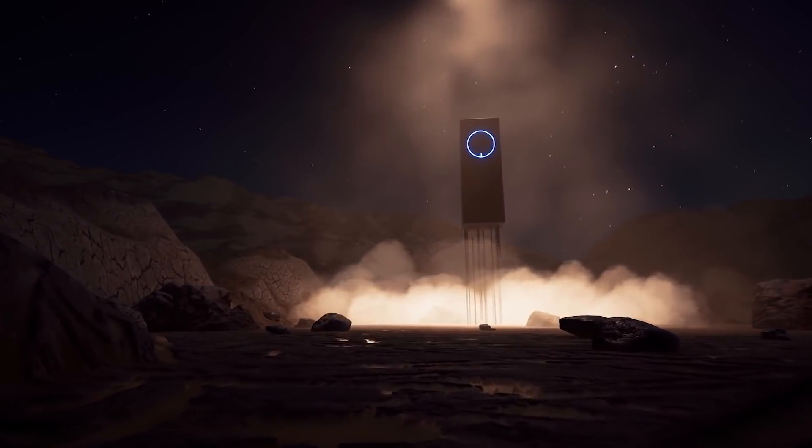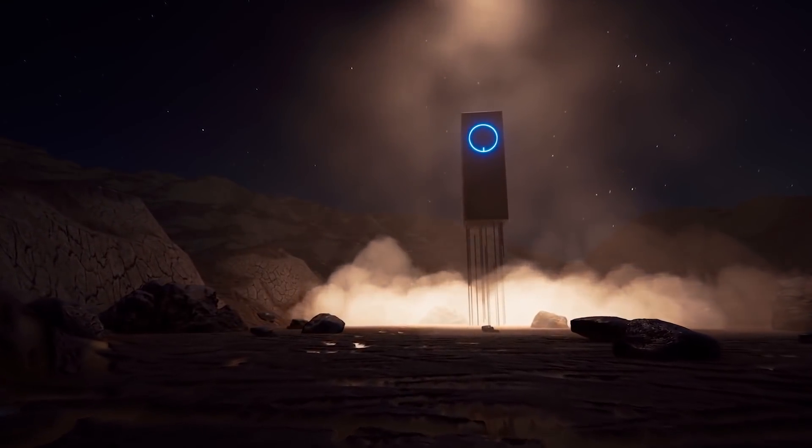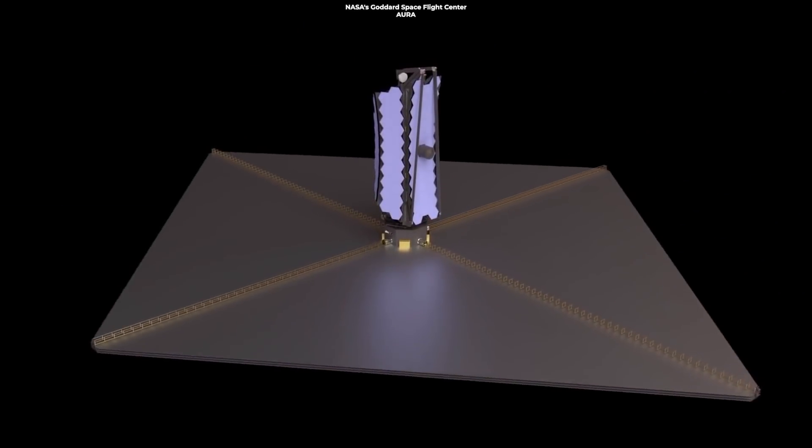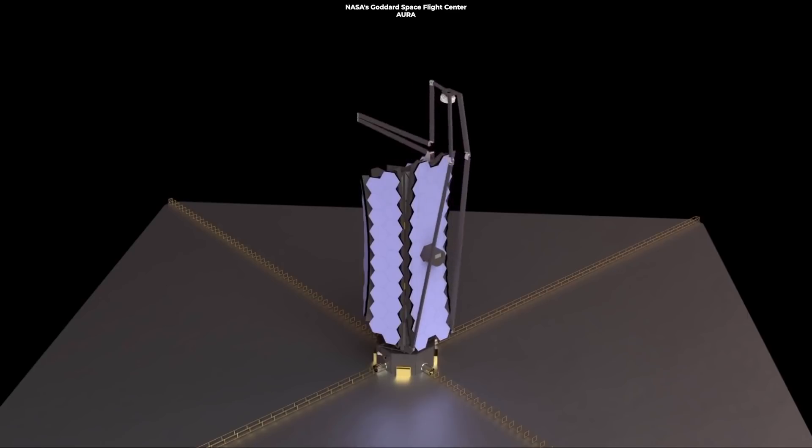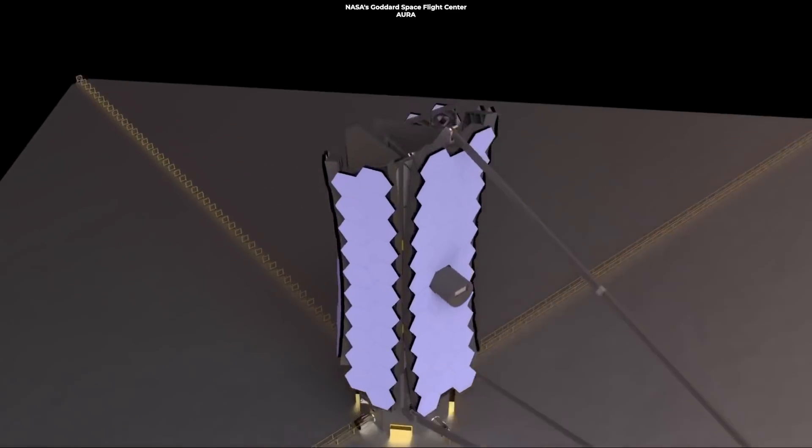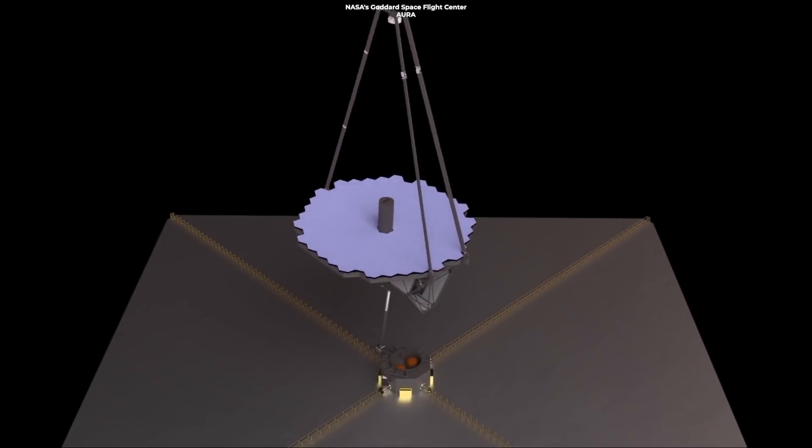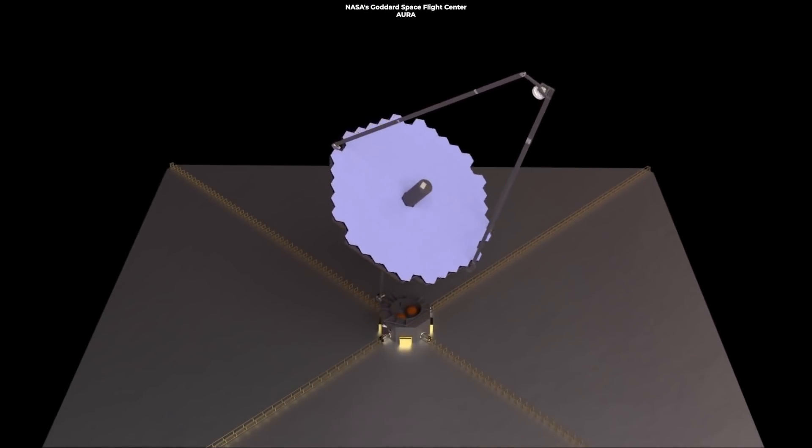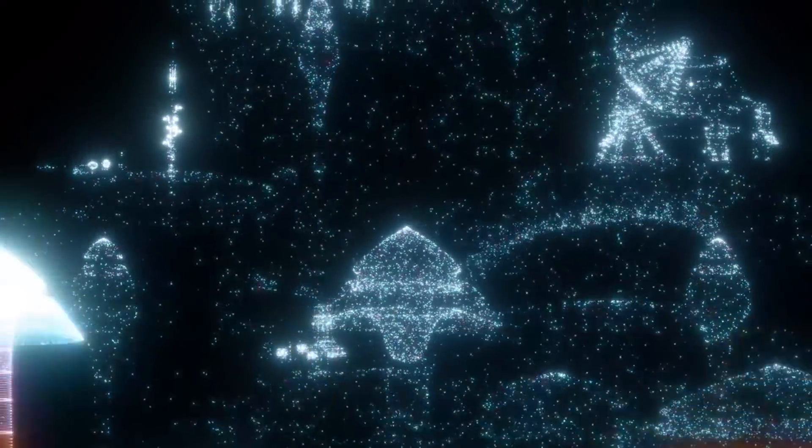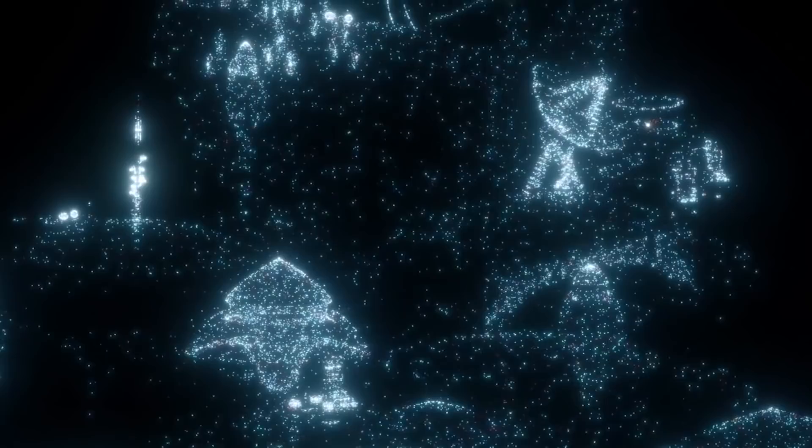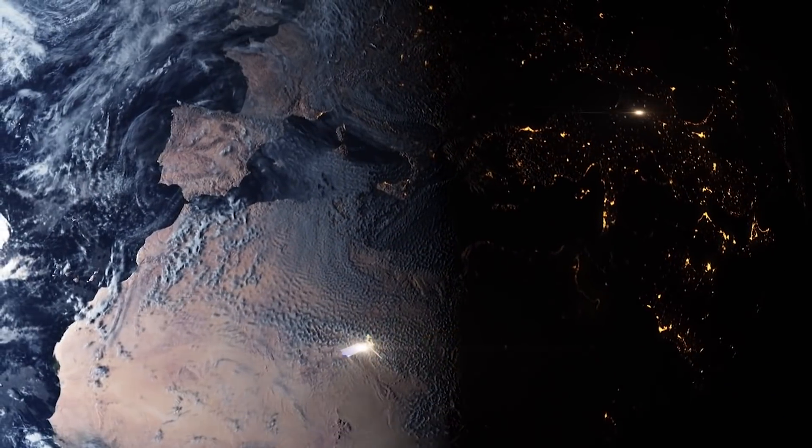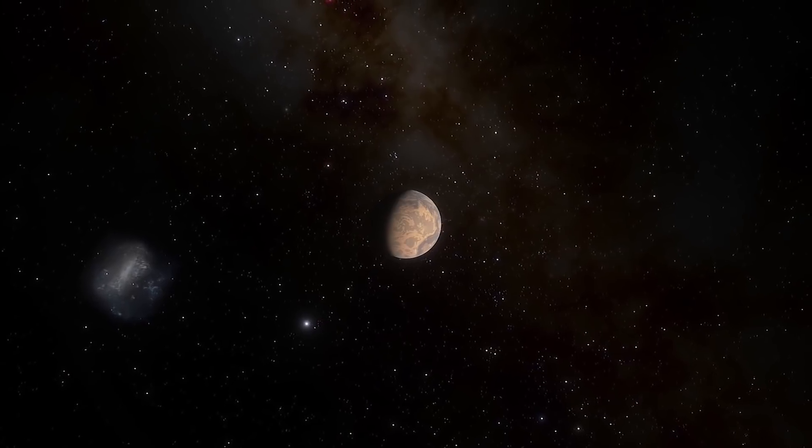The LUVOIR study team has produced designs for two variants of LUVOIR: one with a 15.1-meter diameter telescope mirror called LUVOIR-A, and another with an 8-meter diameter mirror called LUVOIR-B. LUVOIR is the most recent form of a real successor to Hubble Space Telescope, and it is planned to observe targets in UV, visible, and infrared wavelengths, as opposed to JWST's only infrared capacity.